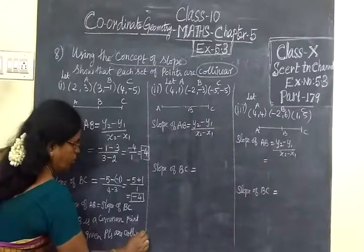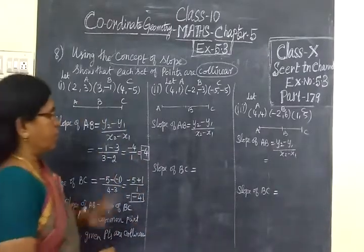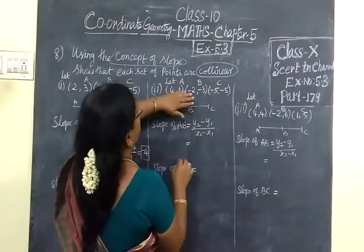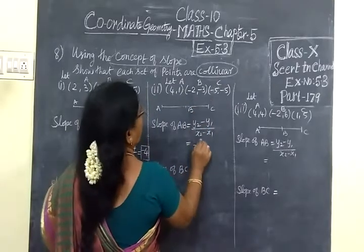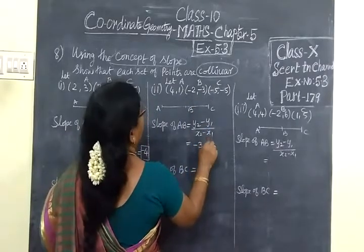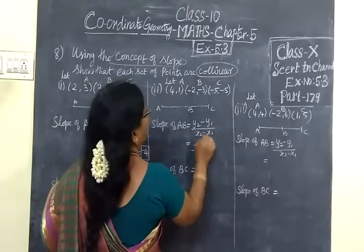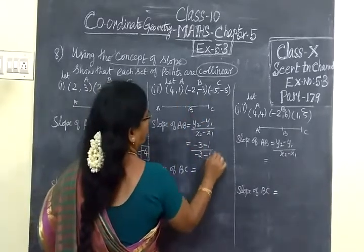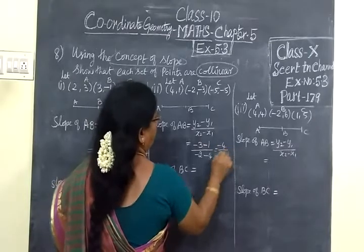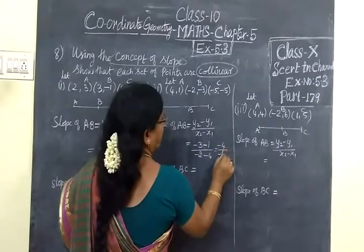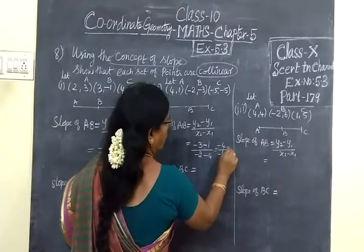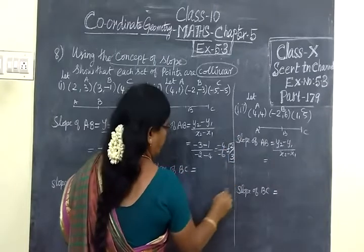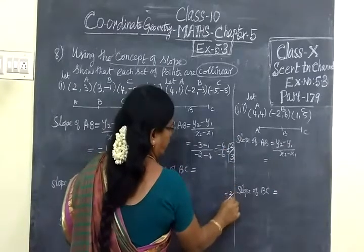Here no need to find AC again. So there is the same method. You take AB. Y2 is minus 3, minus Y1 which is 1, by X2 minus 2, minus X1 which is 4. So minus 4 by minus 6, minus minus cancel. Take 2 common. 2 by 3 is equal to the answer. So the same 2 by 3 answer should come for the next one.